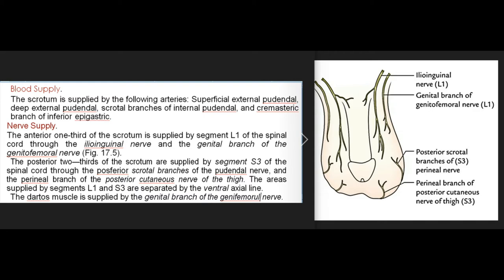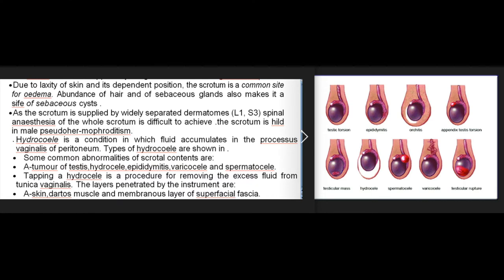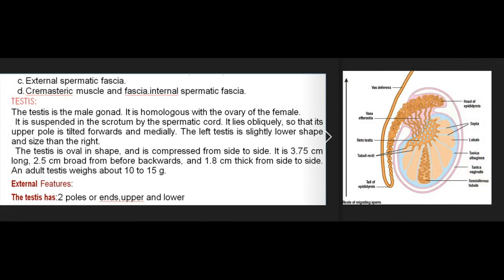The dartos muscle is supplied by the genital branch of the genitofemoral nerve. Due to laxity of skin and its dependent position, the scrotum is a common site for edema. Abundance of hair and sebaceous glands also makes it a site of sebaceous cysts. As the scrotum is supplied by widely separated dermatomes, spinal anesthesia of the whole scrotum is difficult to achieve. The scrotum is fused in male pseudohermaphroditism. Hydrocele is a condition in which fluid accumulates in the processus vaginalis of peritoneum. Some common abnormalities of scrotal contents include tumor of testis, hydrocele, epididymitis, varicocele, and spermatocele. Tapping a hydrocele involves penetrating: skin, dartos muscle, membranous layer of superficial fascia, external spermatic fascia, cremasteric muscle and fascia, and internal spermatic fascia.